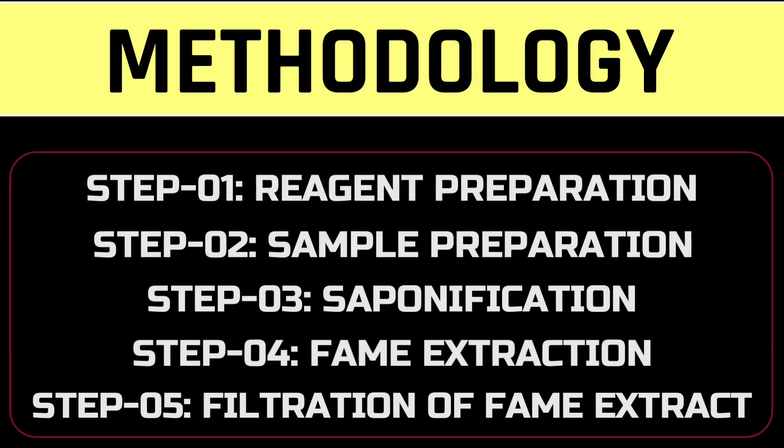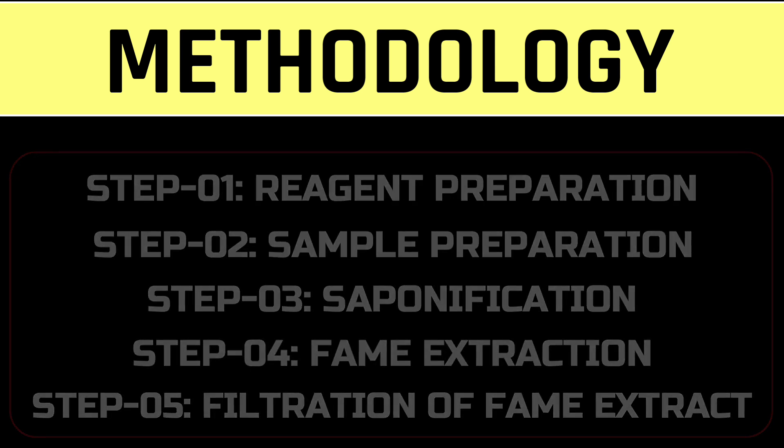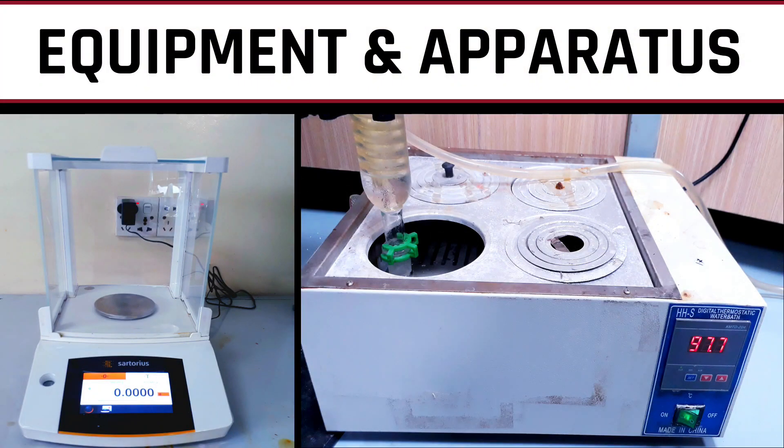Preparation of fatty acid methyl ester involves five steps, such as reagent preparation, sample preparation, saponification, fatty acid methyl ester extraction, and filtration of the extract.